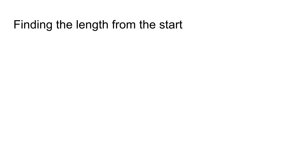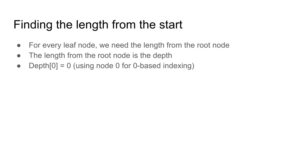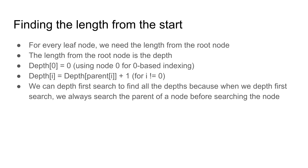We need to find the length from the start and the probability of reaching each node. To find the length from the start, we need the depth of each node from the root. Using 0-based indexing, the depth of node 0 is 0. For every other node, the depth is 1 more than its parent node's depth. We can use depth-first search to find all depths, because DFS always processes a node's parent before processing the node itself.